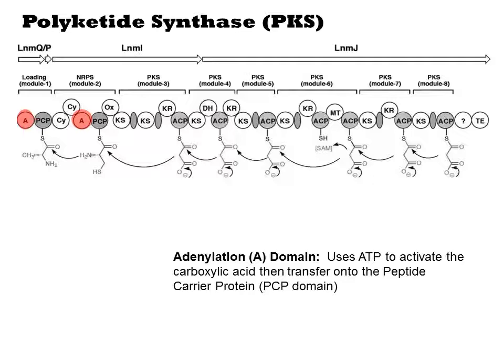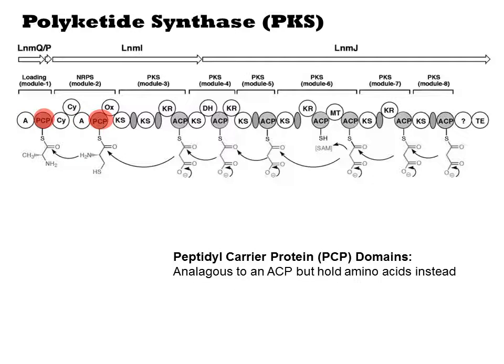The loading domains for a PKS can be very simple, such as an ACP that loads acetyl-CoA or malonyl-CoA. In our example, we instead begin with alanine and serine amino acids. Amino acids aren't normally formed as CoA derivatives in the cell. Instead, adenylation domains use ATP to activate the amino acid for transthioesterification onto the megasynthase. The adenylation domains transfer the amino acid to a PCP domain, which plays the same role as ACP domains in the other modules. There are some additional things like psi and ox that still need to be explained, and we'll come back to those later.